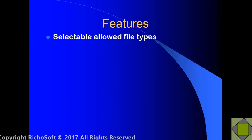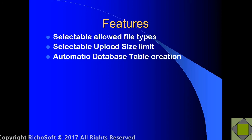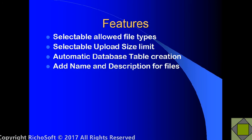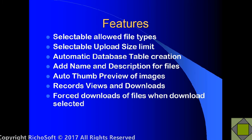In addition you have the selectable allowed file types, the selectable upload size limit, automatic database table creation — so the database table will be created automatically the first time you go to the upload screen. You can add a name and description for files. There is an auto thumbnail preview of images in the view/download panel. It records the number of views and downloads, so you can see how many times your files have been viewed or downloaded. It forces the download of files when download is selected, so if they select to download a PDF, instead of it displaying in the browser via an ActiveX control, it will force it to be downloaded rather than viewed.